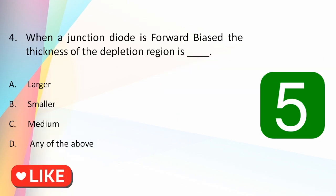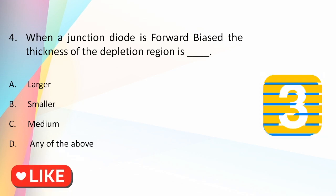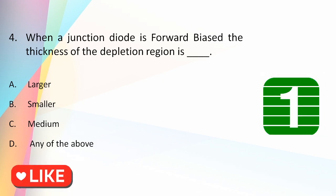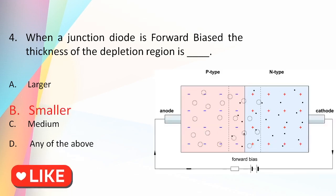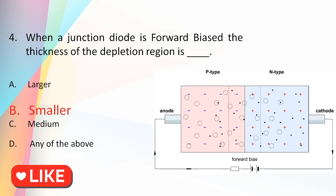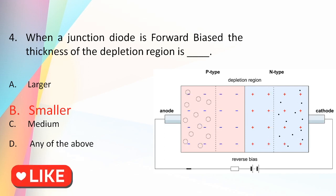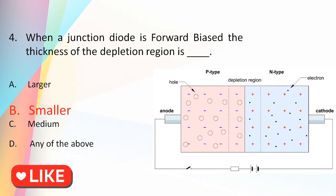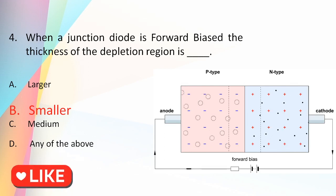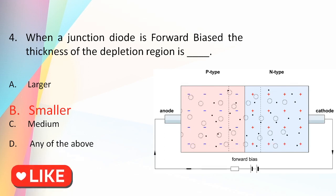When a junction diode is forward biased, the thickness of the depletion region becomes smaller. Forward voltage pushes more free electrons into the P region and holes into the N region, making the depletion region smaller, and the diode starts conducting current.